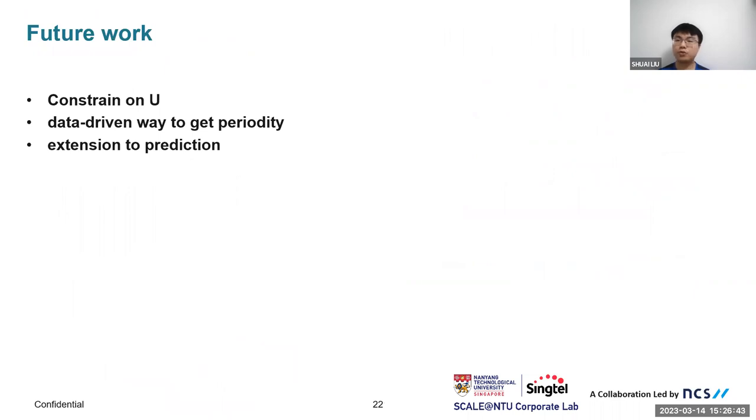In my future work, there are several directions. The first is, as we can see, now we have no constraint on U, so how to design a constraint on U is worth researching. Now the period is a hyperparameter given by users. How to find a data-driven way to get the periodicity is also worth researching. The second point is that many imputation models can be extended to prediction. Since our model has learned internal factors of time series, we think our model can also extend to prediction, classification, and many other time series analysis scenarios. How to extend TIDER to this kind of analysis is another very interesting part.